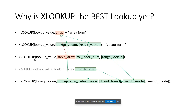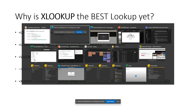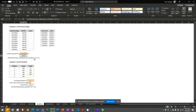They also added the ability to tell XLOOKUP which direction to search — start at the top and go to the bottom, or start at the bottom and go to the top. These are all great improvements. I think XLOOKUP is the best, but let's see it in action with an example that might be a bit more relevant for people in our line of work.